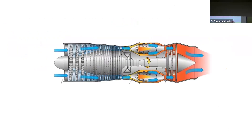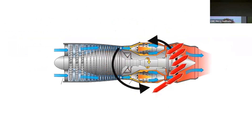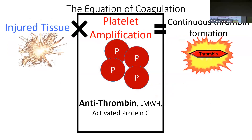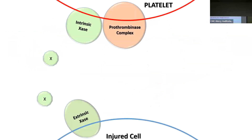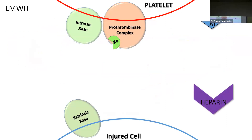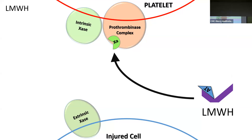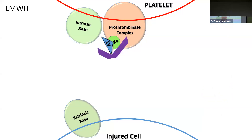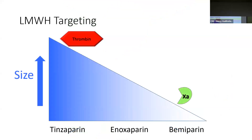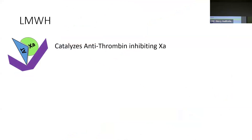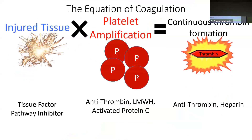Another way to attack coagulation is at the platelet amplification stage — denying the engine its gas so it burns out on its own. That's where low molecular weight heparin comes in. It works the same way with antithrombin as a catalyst but is smaller, as the name implies. It specifically binds more to factor 10a on the prothrombin complex, functioning to shut down the platelet amplification state in a size-dependent manner. LMWH has a half-life of three to four hours.